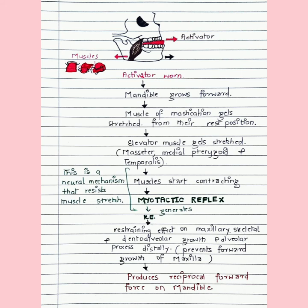Once the activator is worn and the teeth have engaged in the appliance, the mandible is taken forward. The muscles of mastication — specifically the elevator muscles: masseter, medial pterygoid, and temporalis — get stretched from the rest position. This is a neural mechanism: whenever a muscle stretches, muscle spindles located within the muscle activate and send signals, causing the muscles to contract. This is known as the myotactic reflex — whenever a muscle changes length, it begins to contract.